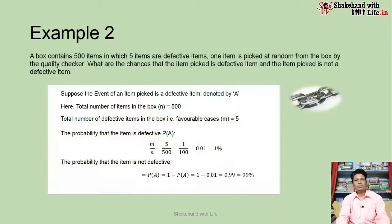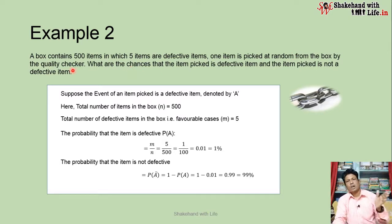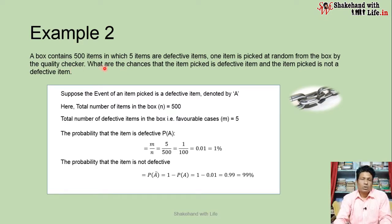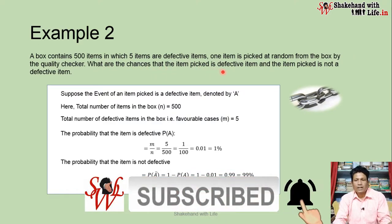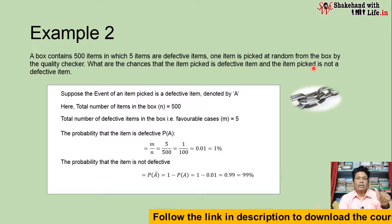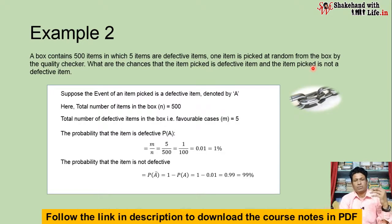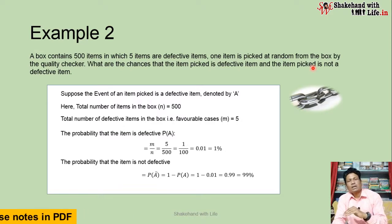Now let's take another example. A box contains 500 items, in which five items are defective. One item is picked at random from the box by a quality checker. What are the chances that the item picked is a defective item? And what is the probability of not getting a defective item? We want to calculate these two things.